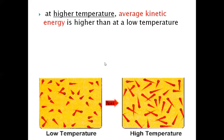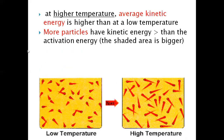At low temperature, the speed at which the particles are moving is lower compared to high temperature. When there is a high temperature, there is more kinetic energy, and this makes collisions happen more frequently. If the particles are slow, the rate at which they collide is low, so the rate of reaction is also low.